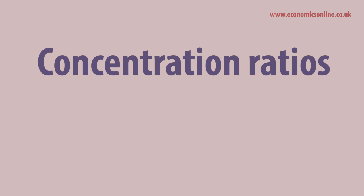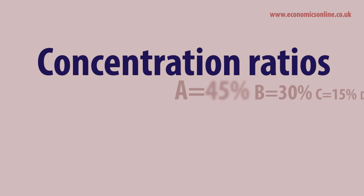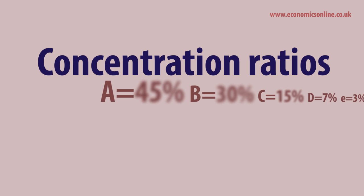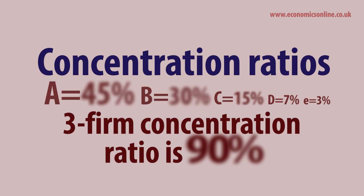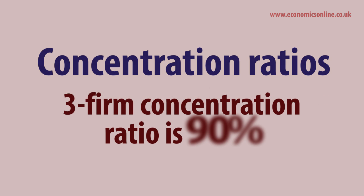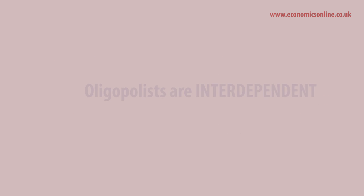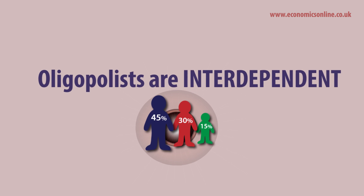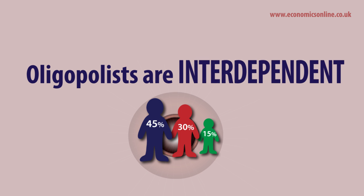Here the top three firms have a combined market share of 90 percent, making the market highly concentrated. Oligopolists are dependent on each other for their success or failure — they are interdependent. An action by one affects the others. Oligopolists may collude or compete with each other. Collusion means acting together for the mutual benefit of all firms.